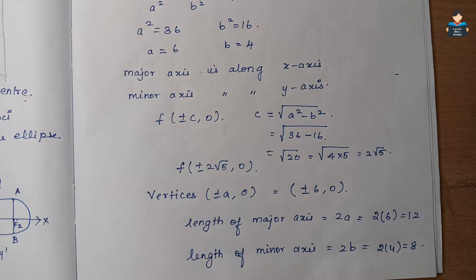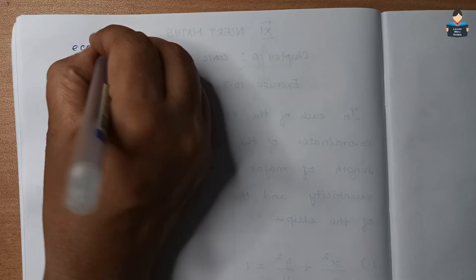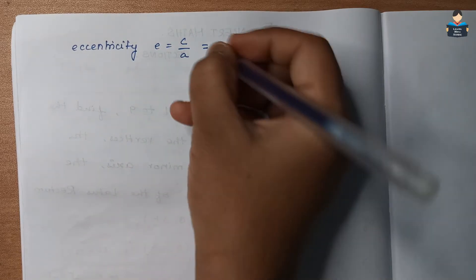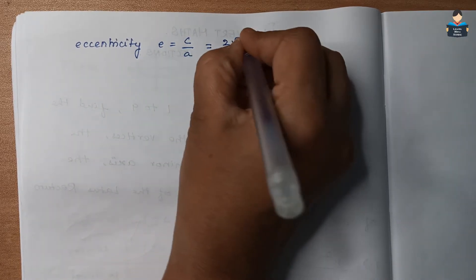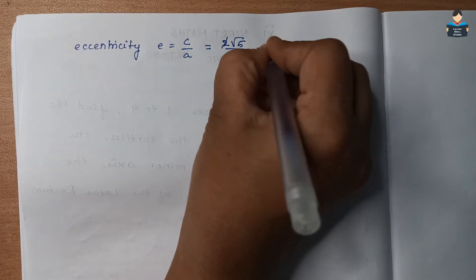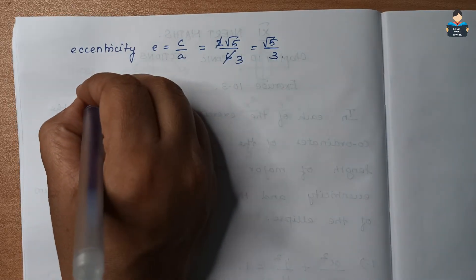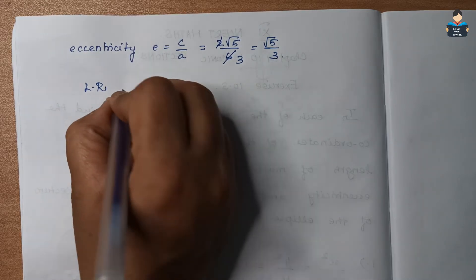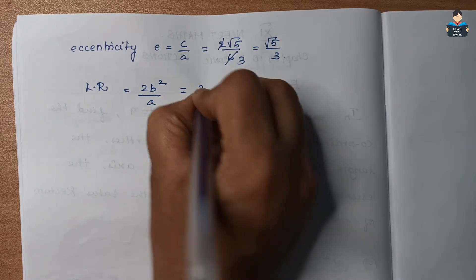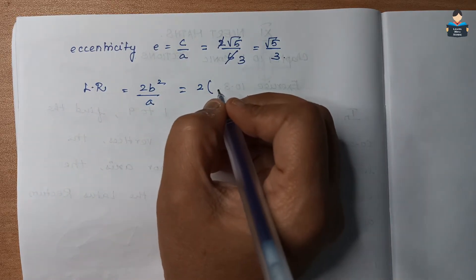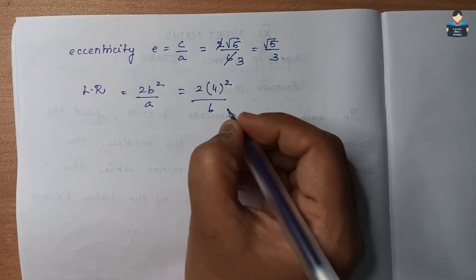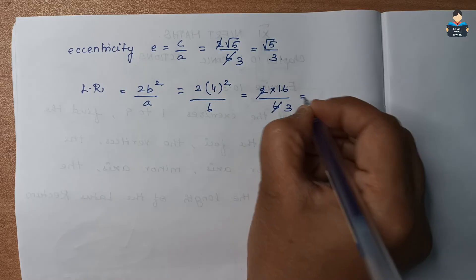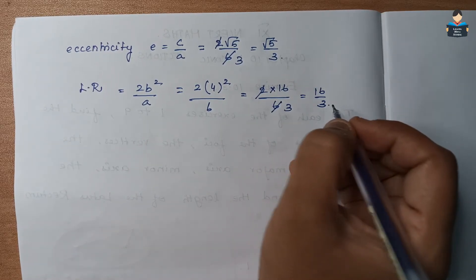The eccentricity e = c / a = 2√5 / 6 = √5 / 3. The length of the latus rectum LR = 2b² / a = 2 × 16 / 6 = 16 / 3.